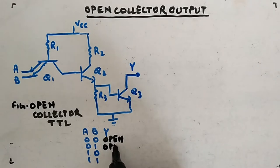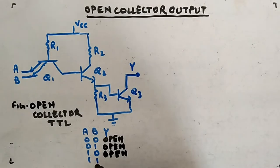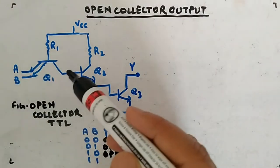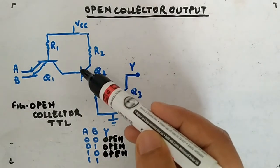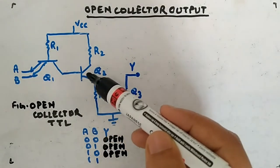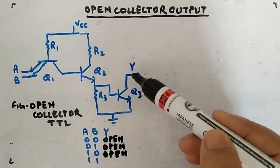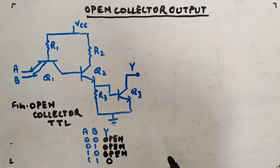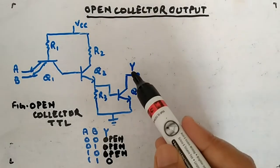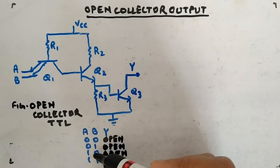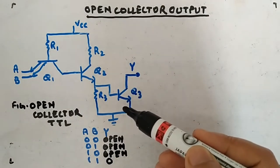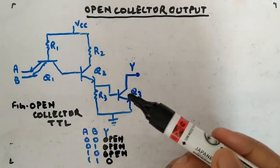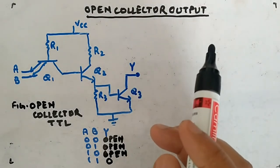When any input is low, the output transistors are in cutoff — meaning the output is open, not connected to anything. When both inputs are 1, this junction will be reverse biased and this one forward biased, working in reverse active mode. Q3 will be in saturation, so the output will be low. So: output is open when any input is low, and output is low when both inputs are high.